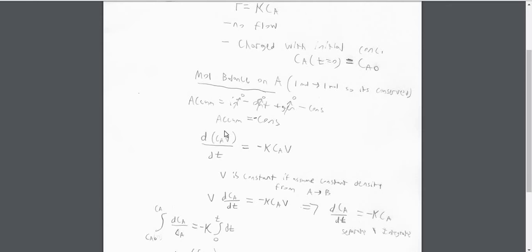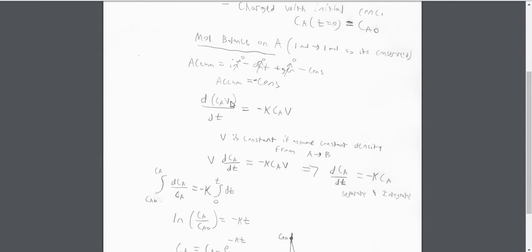So the accumulation of moles is going to be Ca times V, which is moles per liter times the volume in liters, or whatever unit of volume you want, per time. So that's the derivative. And then that's going to be equal to the rate of consumption.